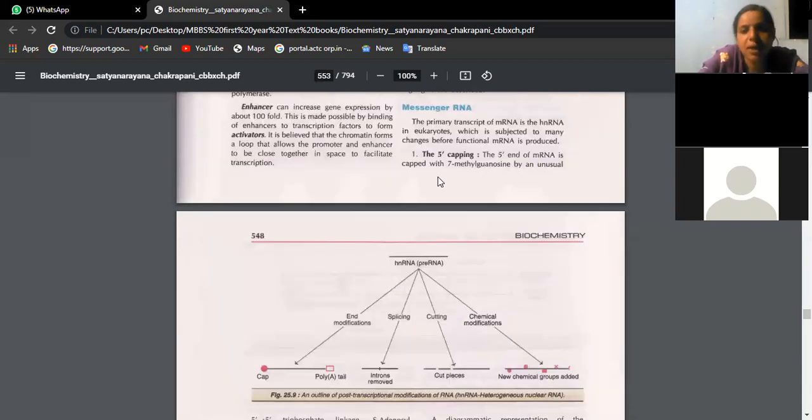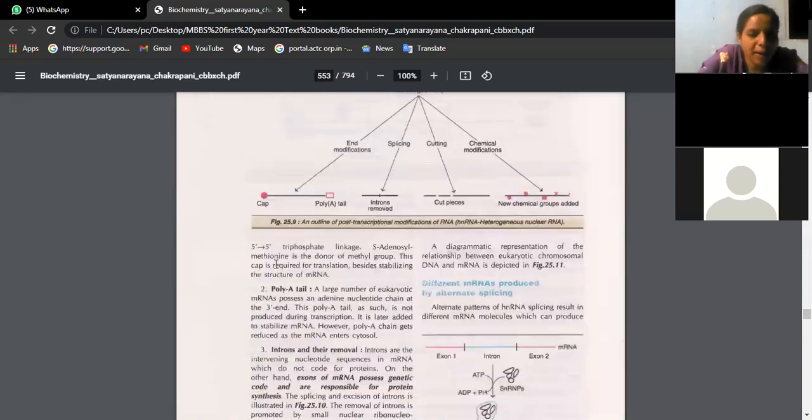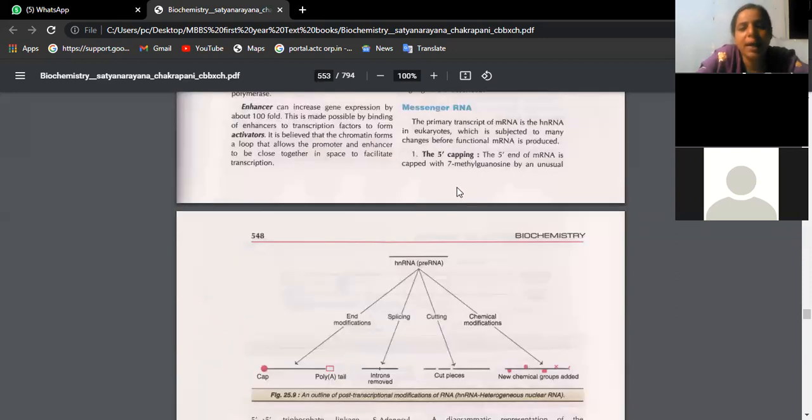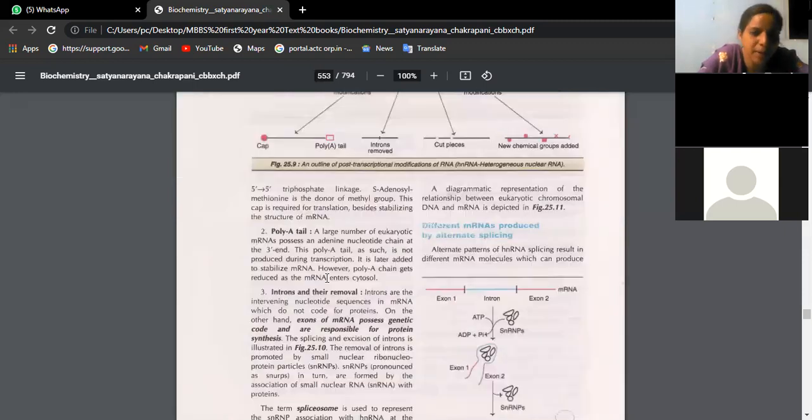Now see here, what is this? Five prime capping. That means five prime end of mRNA is capped with this group, seven methyl guanosine by triphosphate linkage. Here, as I told you, SAM is working to give this methyl group. This cap is required for translation. That means this is one modification where you see at the head end, we are finding seven methyl guanosine is coming.